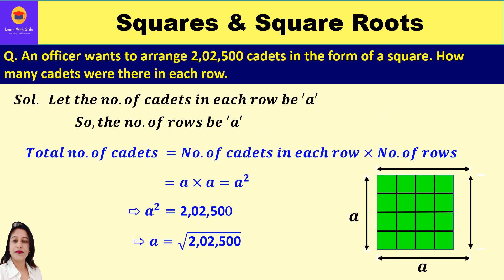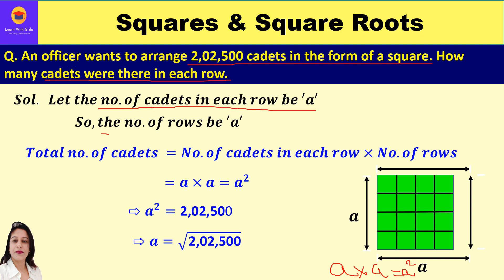Now let's take up one more question: an officer wants to arrange 22,500 cadets in the form of a square. How many cadets were there in each row? He wants to arrange cadets in the form of a square and find how many cadets are in each row. This is the same type of question — we use the rule a × a = a², the area of a square. Let the number of cadets in each row be 'a' and the number of rows also be 'a'.